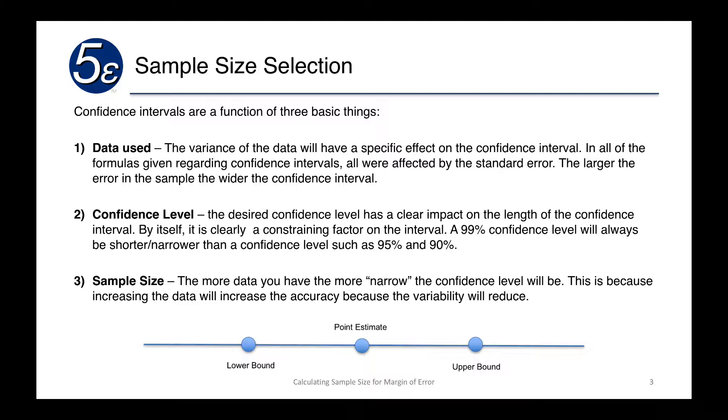And finally, the overall sample size. The more data you have, the more narrow the confidence level will be. And this is because increasing the data will increase the accuracy because the variability will reduce.